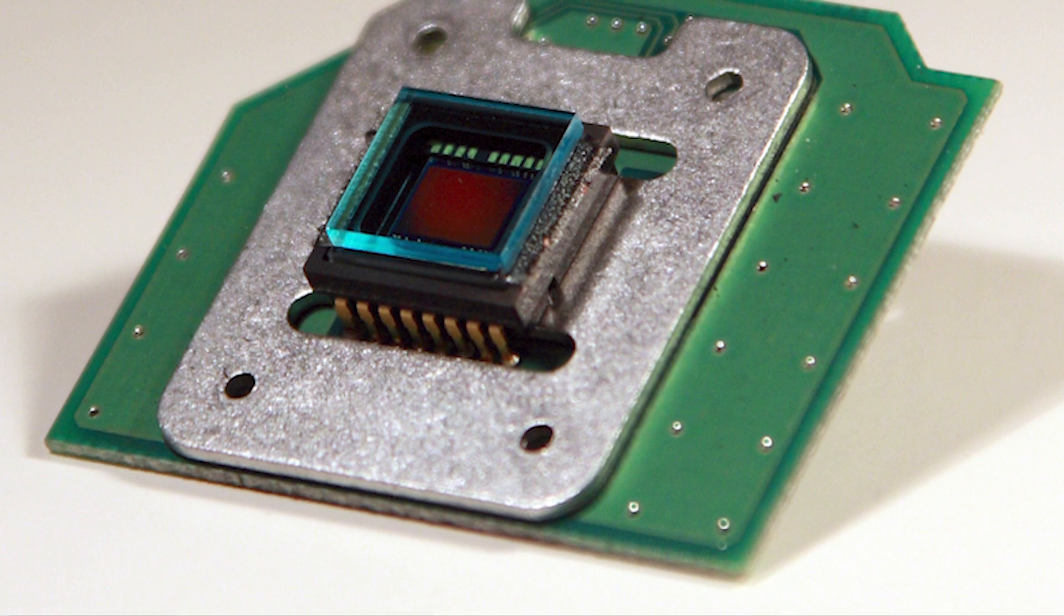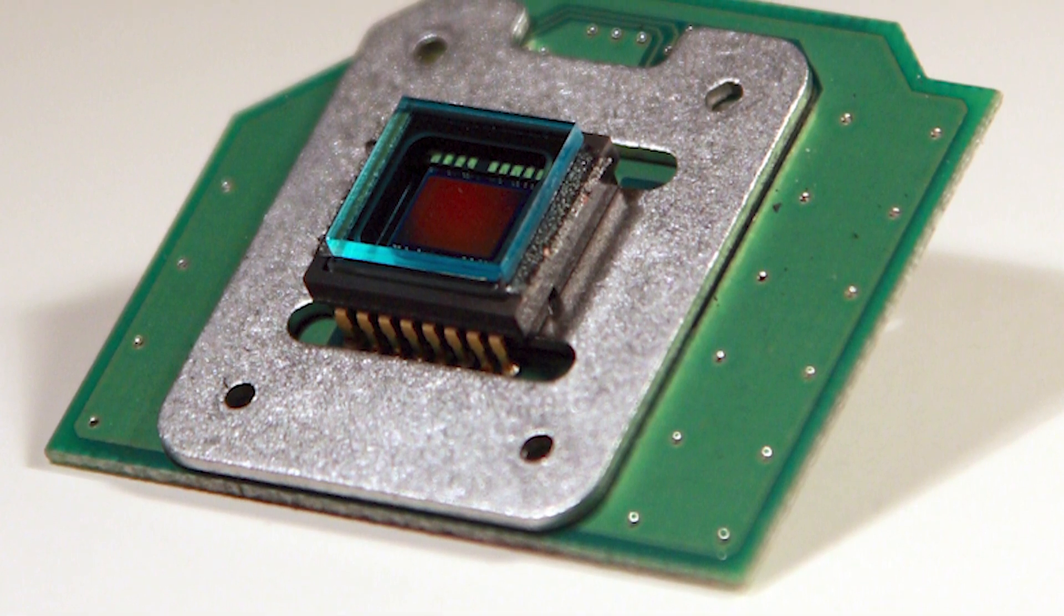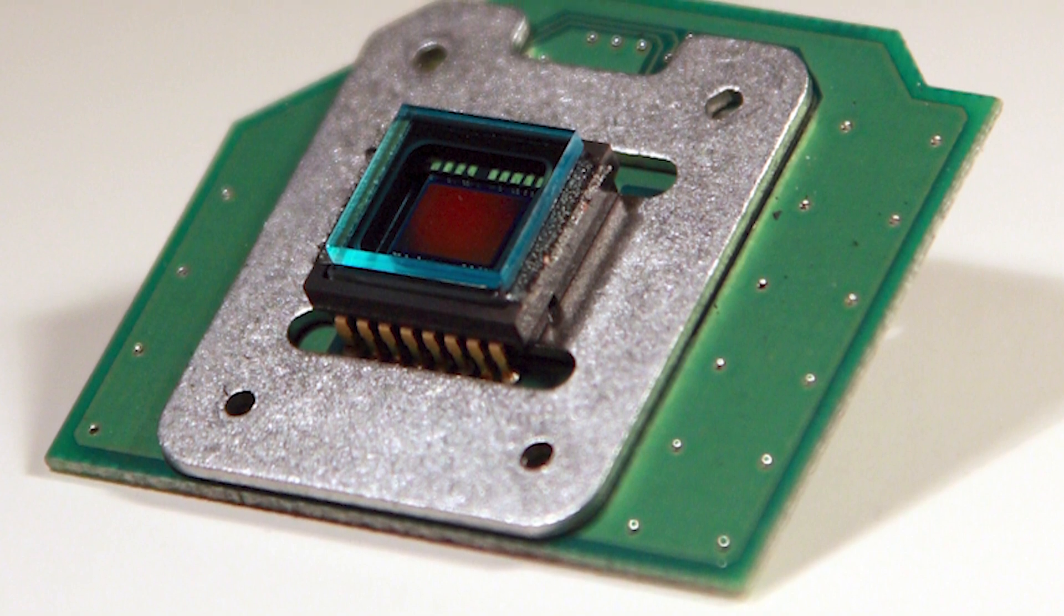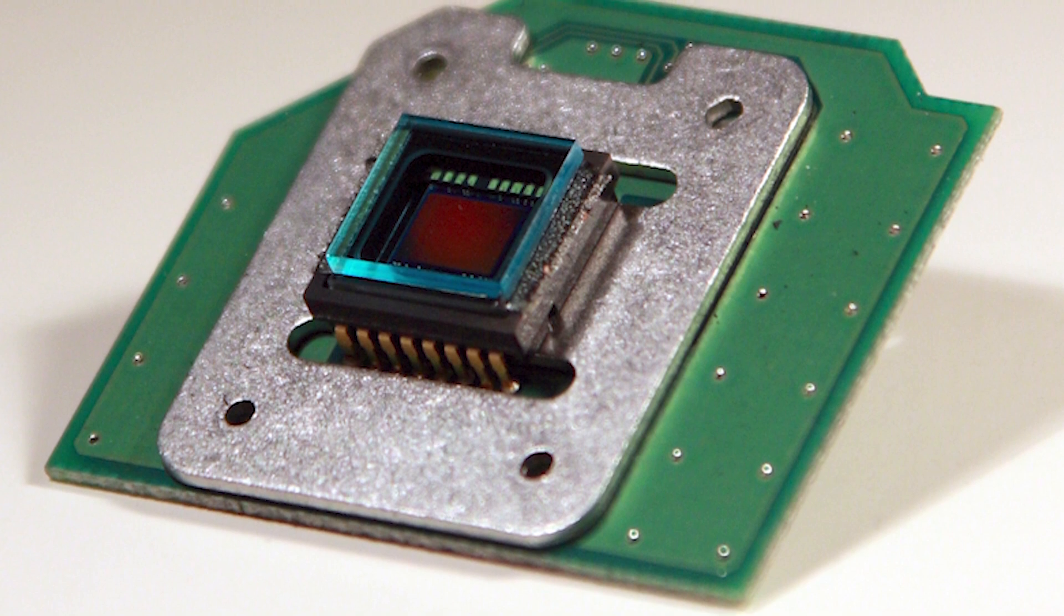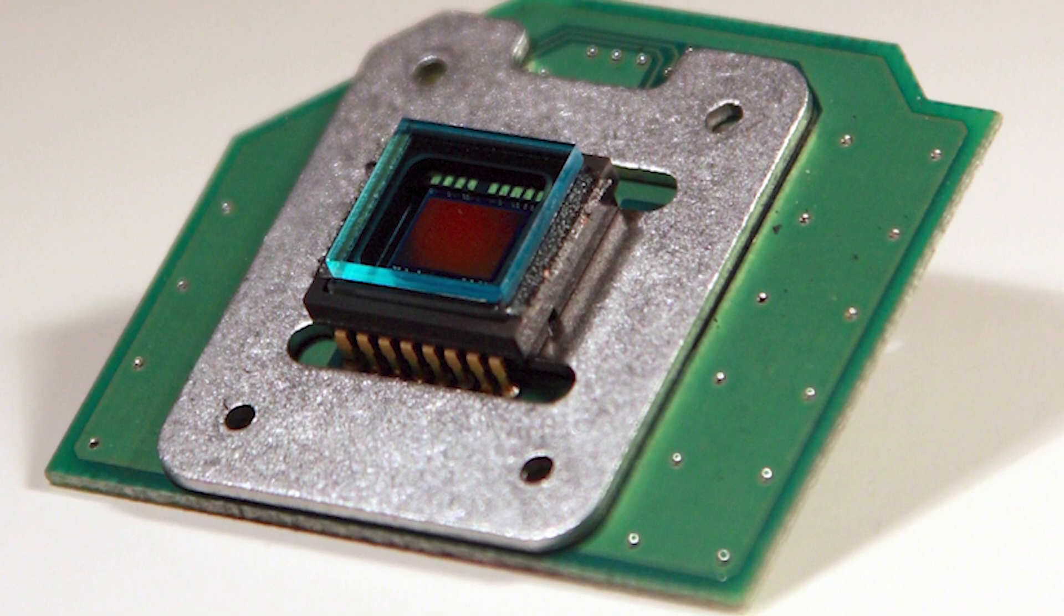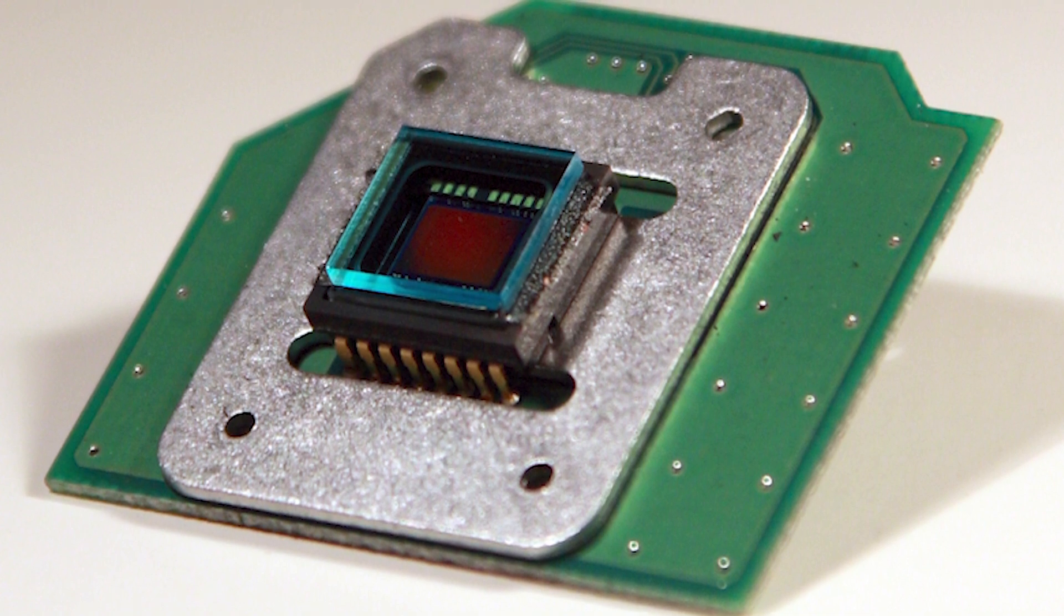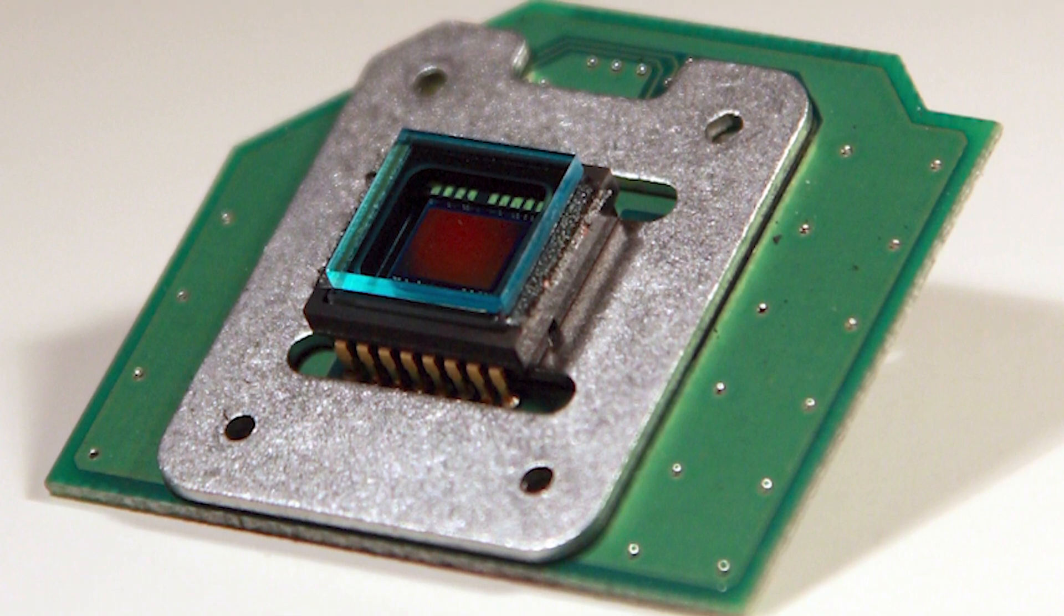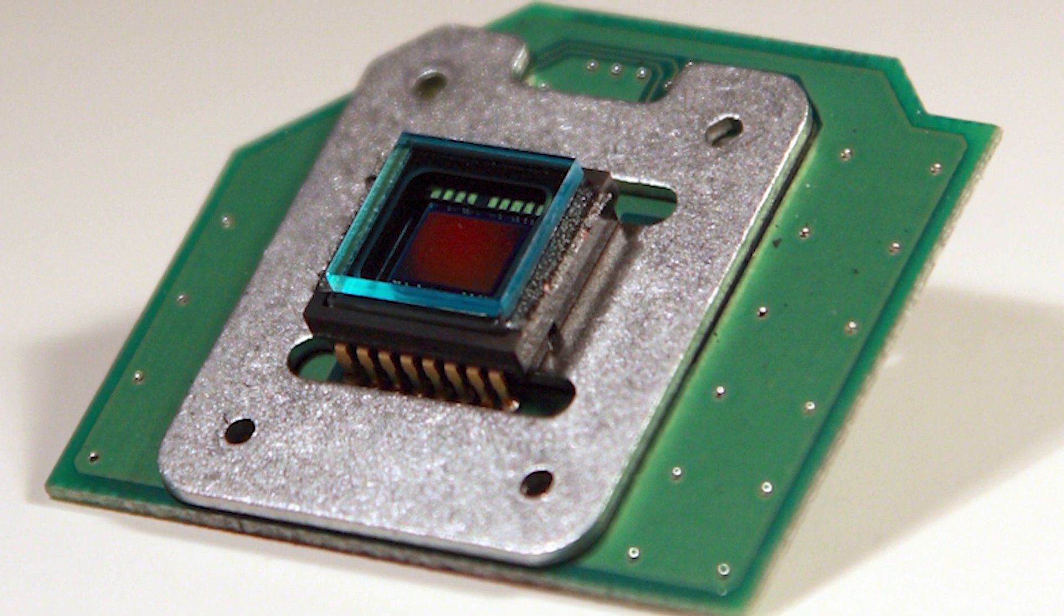The next key development in digital imaging was the charge-coupled device, or CCD, developed by physicists Willard Boyle and George Smith at Bell Laboratories in 1969. While studying applications for metal oxide semiconductor or MOS-based microelectronics, Boyle and Smith realized that an array of MOS capacitors could be made to work like a magnetic bubble memory array, a device that stores information using small magnetized regions on a piece of metal film.